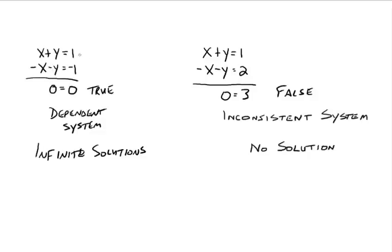With our infinite solutions, go back to the original system and take one of the two equations — it really doesn't matter which one, because they're essentially the same line. I'm going to take the first one: x plus y equals one. Take one of the two equations and isolate a variable, getting the letter all by itself. I'll go ahead and write y in terms of x by subtracting x from both sides, giving us y equals negative x plus 1.